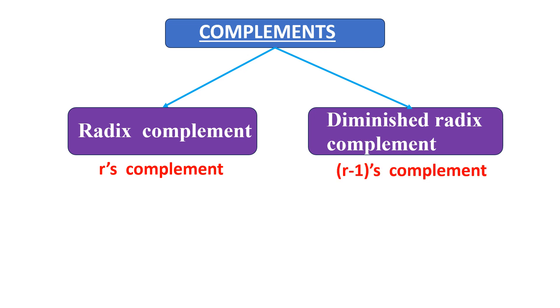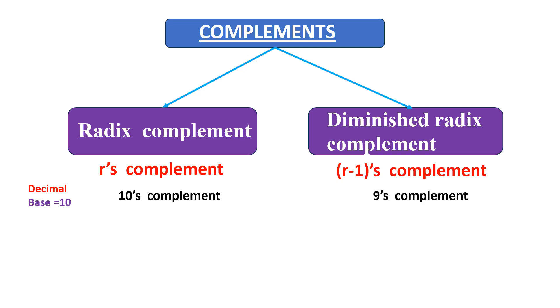In a decimal number system, the base is 10. So the R's complement is referred to as 10's complement and R minus 1's complement is referred to as 9's complement.